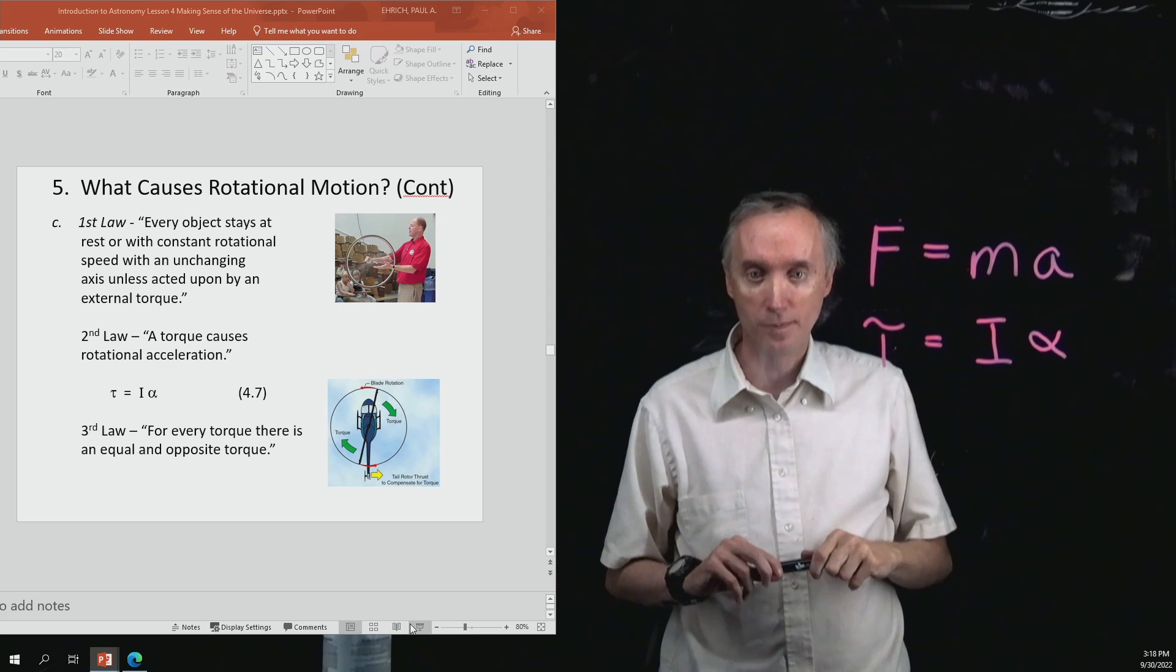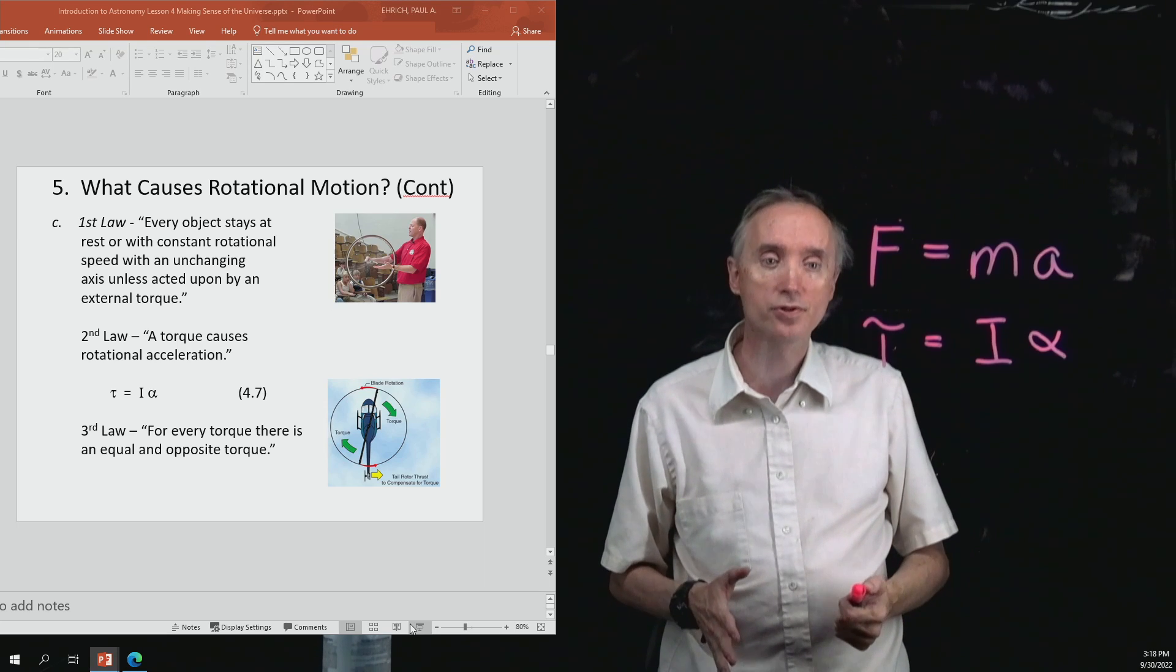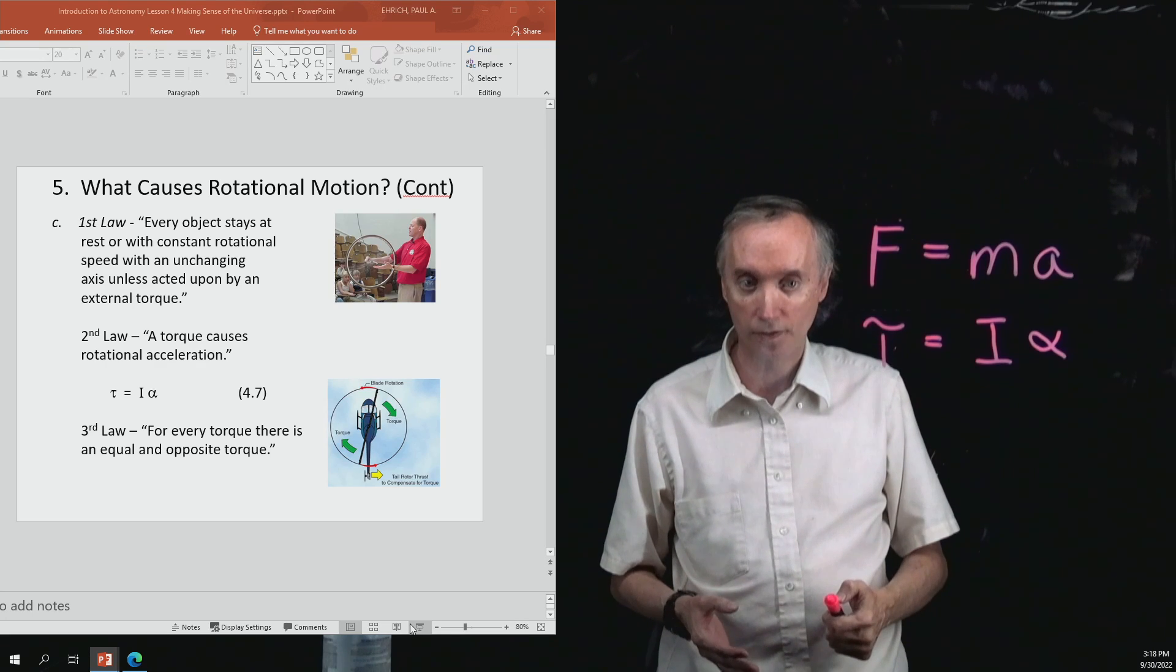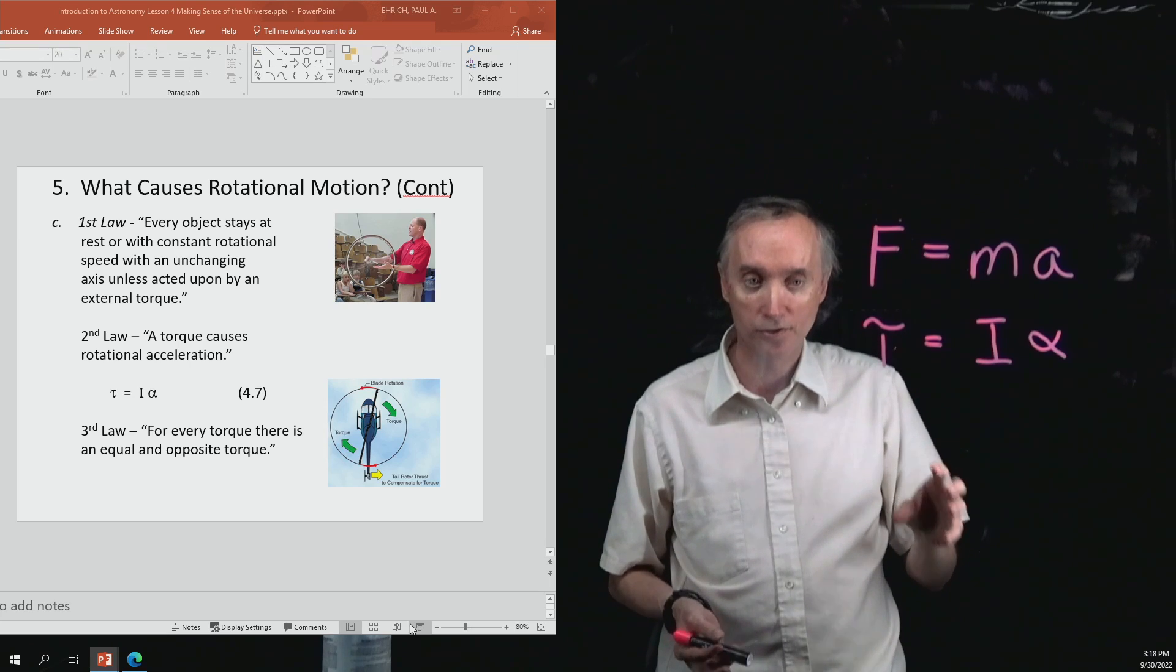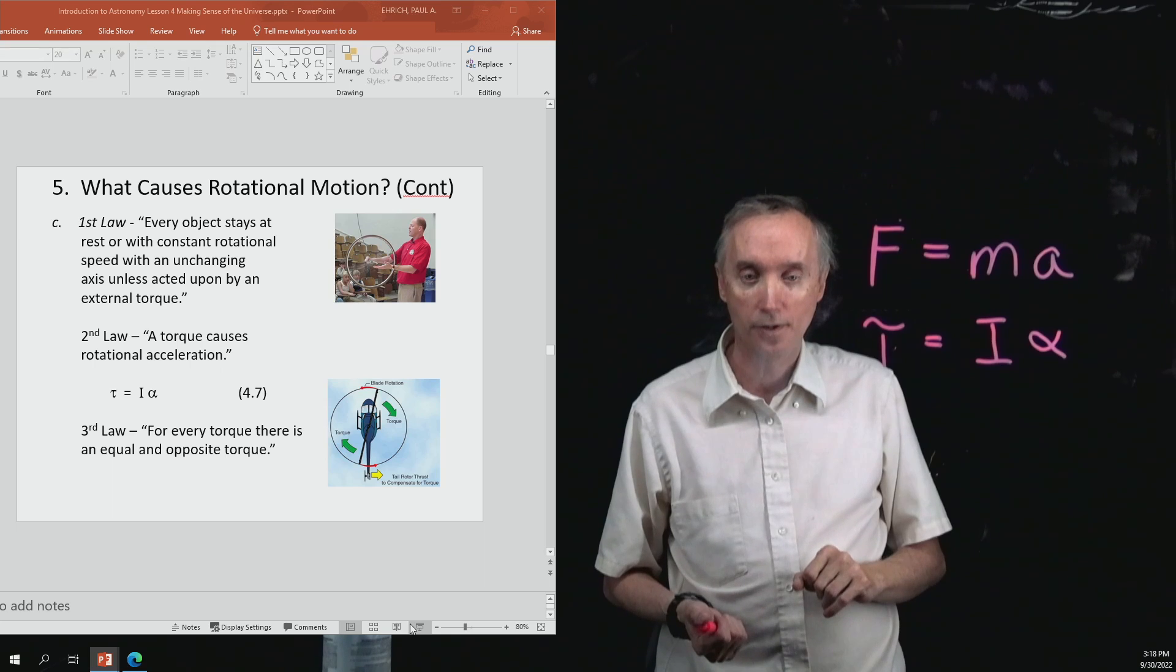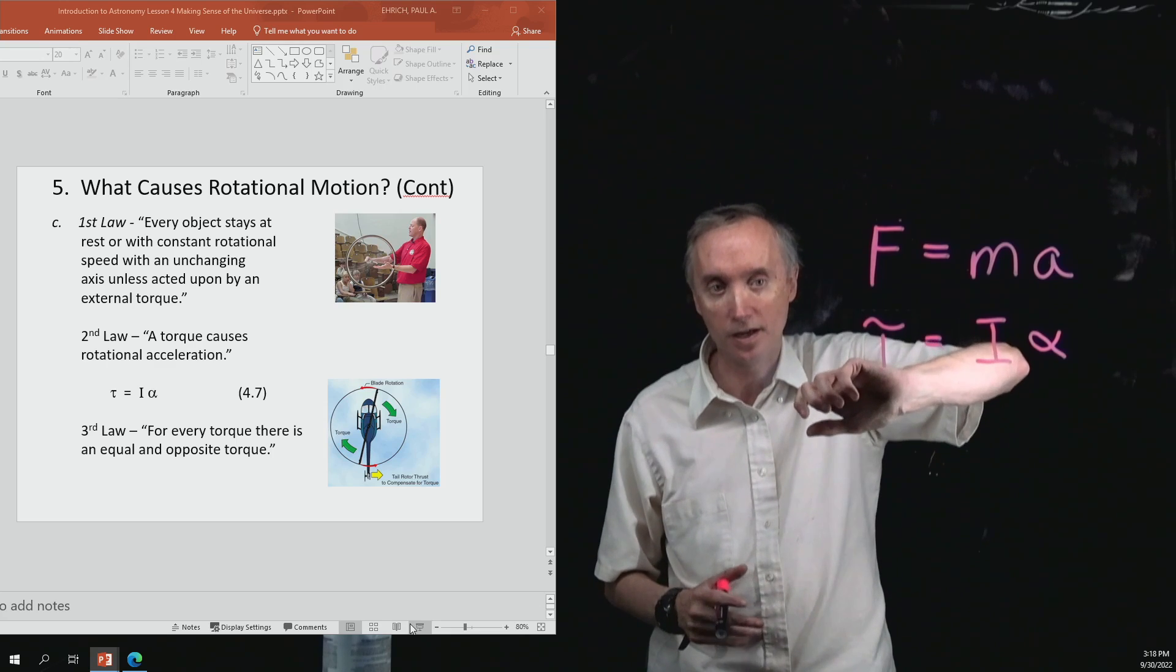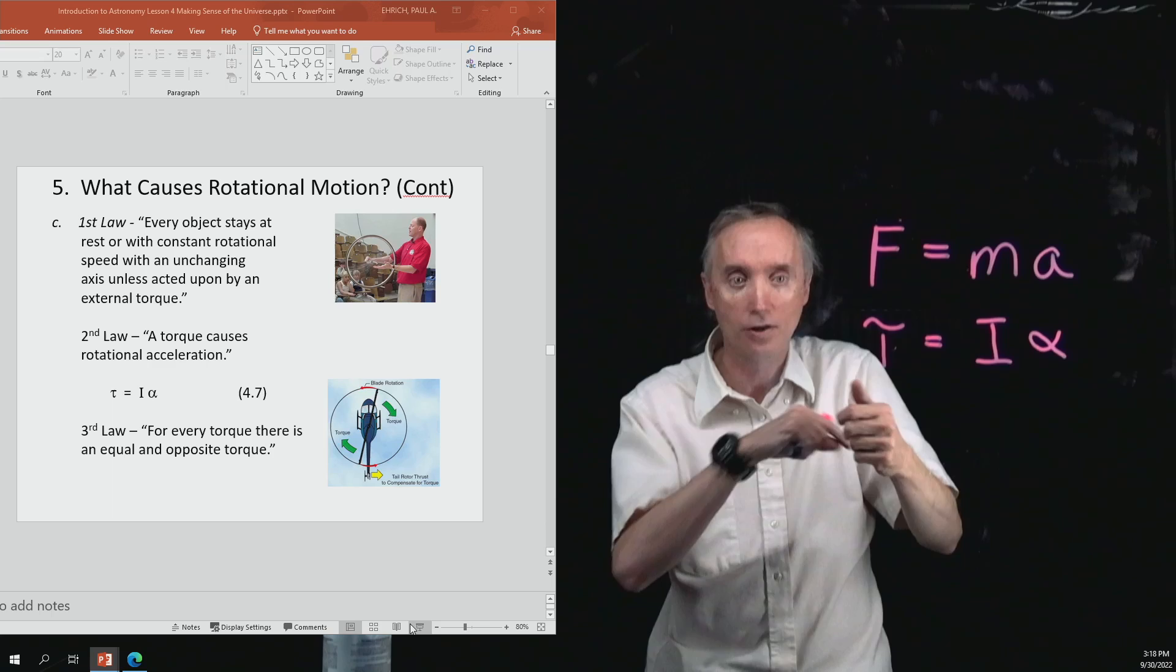Then you got the third law of motion. So the original Newton's third law of motion said that for every force, there's an equal and opposite counter force that goes with it. So for every action, that's the original force, there's an equal and opposite reaction force that goes with it. So this would say that when you apply a torque, like the ketchup bottle, the ketchup bottle applies a torque back on you.